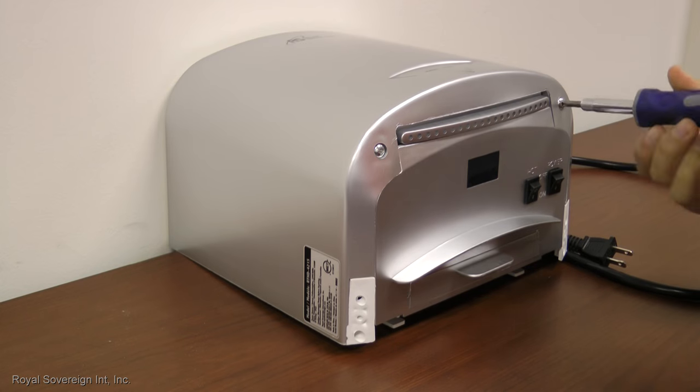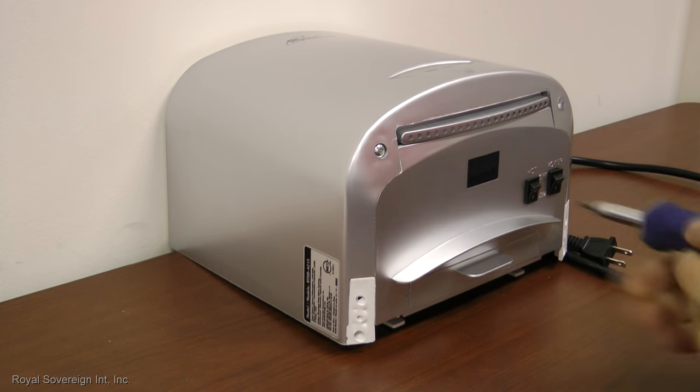Step 1: Remove the hand dryer's plastic cover by removing the two screws at the bottom of the unit.